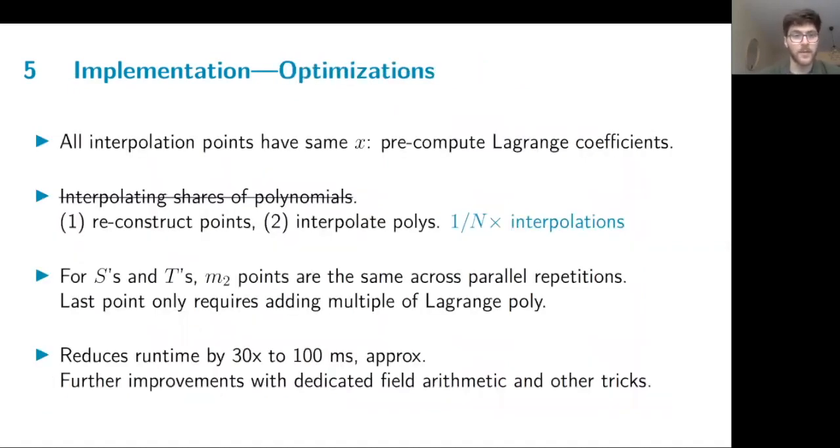We've optimized the implementation in different ways. First, we noticed that all interpolation points have the same x-coordinates, so we can pre-compute some coefficients. Instead of interpolating polynomials for each party, the prover has an overview of everything, so it can reconstruct the polynomials in an unshared fashion and then interpolate, which takes a factor of N out of the computational load. And also for the S and T polynomials, the inputs are the same for each parallel execution. They're just shared in different random ways. So we can use these common values across them to further optimize the Lagrange interpolation. And all of this reduces runtime by almost 30 times. And then using some further improvements, we can reduce to the runtimes that we've achieved.